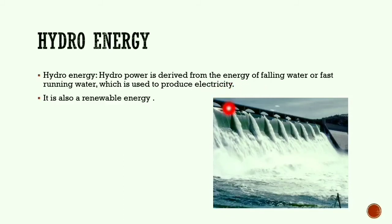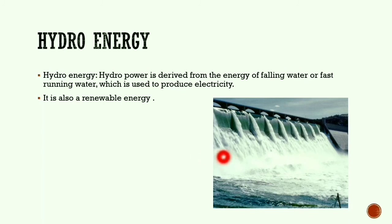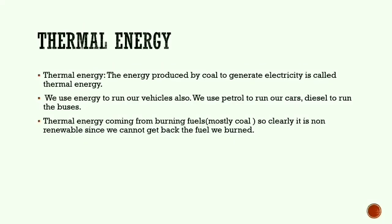Hydro energy is derived from the energy of falling water or fast-running water. Hydro means water, which is why we call it hydro energy. It is used to produce electricity with the help of a turbine, and it is also a renewable energy.